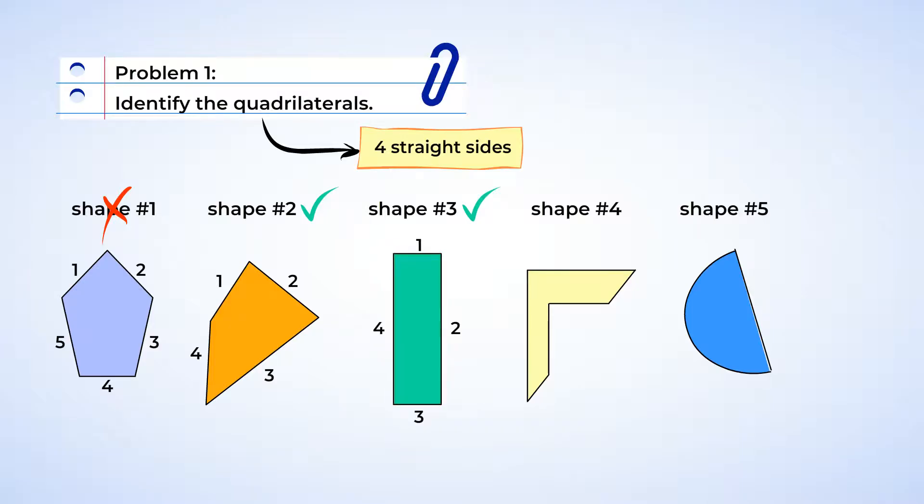Next shape, number four. Alright, this shape has some short sides, so let's count carefully. This shape has six sides. It is not a quadrilateral.